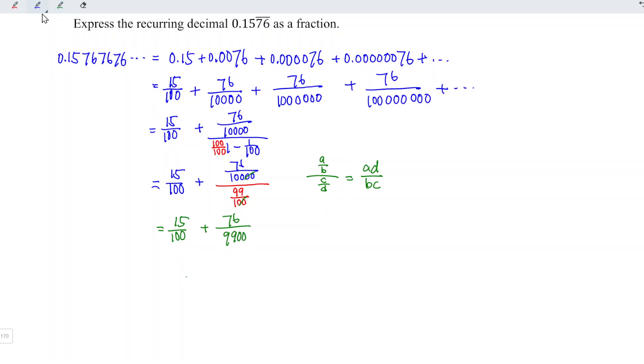We can now standardize the denominator of these two fractions by multiplying by 99 for the numerator and denominator of the first term. This equals 15 times 99, which is 1,485, divided by 100 times 99, which is 9,900.